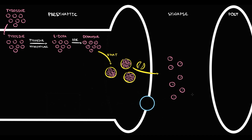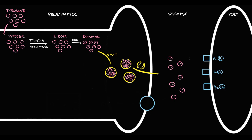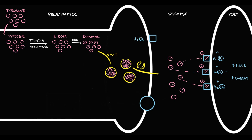Norepinephrine molecules enter the synapse. On the postsynaptic neuron we have numerous adrenergic receptors: alpha-1, beta-1, and beta-2. Once norepinephrine molecules appear in the synapse, most of them immediately bind to and activate these adrenergic receptors, which improves mood and increases energy. Some norepinephrine molecules bind to the alpha-2 receptor on the presynaptic neuron, which is an autoreceptor. With activation, this receptor inhibits the exocytosis of norepinephrine vesicles into the synapse, providing reciprocal regulation.